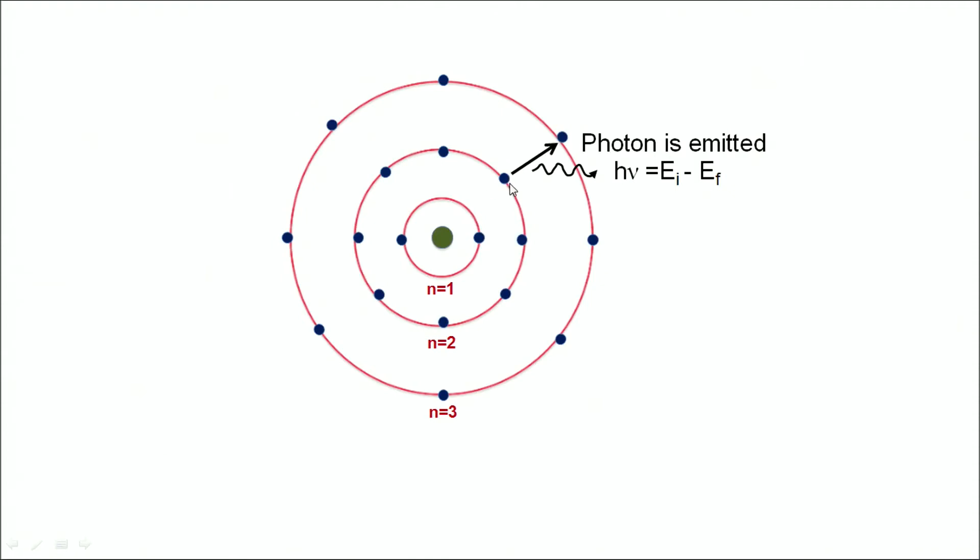When an electron, for example sitting over here, it jumps from an inner orbit to an outer orbit, then a photon of energy hν which is equal to Eᵢ - Eₓ is emitted. What is Eᵢ? Eᵢ is the energy of the electron in the initial stage when it was revolving in this orbit and Eₓ is the energy of the electron when it has reached the outermost orbit.